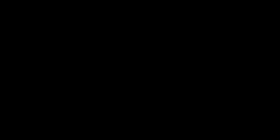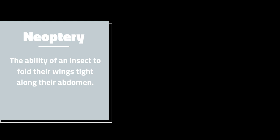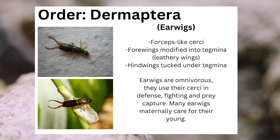Another key innovation that evolved in insects was neoptera, or the ability of an insect to fold their wings tight along their abdomen. Orders of insects that emerged after this innovation include Dermaptera, the order containing the insects known as earwigs. They can be identified from their forceps-like cerci, their forewings modified into tegmina, which are leathery wings, and their hindwings tucked under their tegmina. Earwigs are omnivorous, using their cerci in defense, fighting, and prey capture. Many earwigs maternally care for their young.